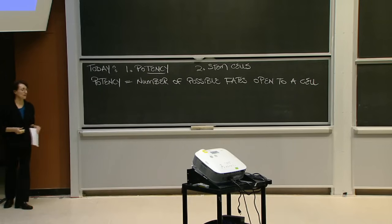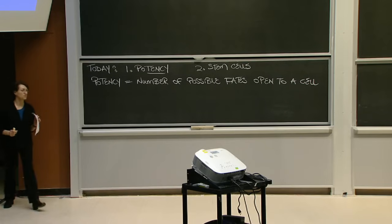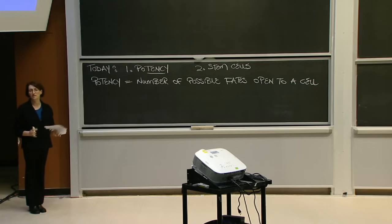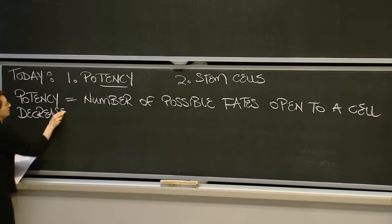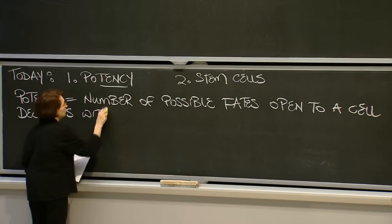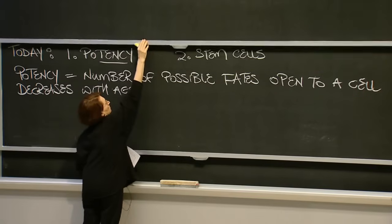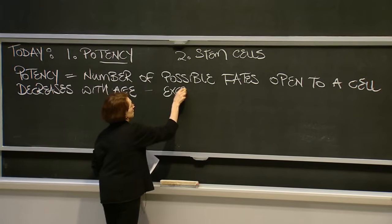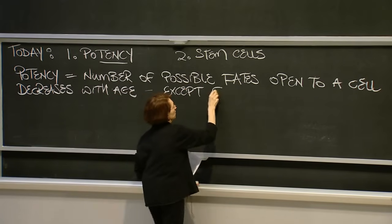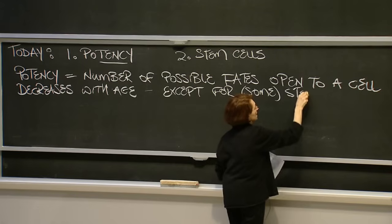This is a very important concept of development, because in general, potency decreases with age and decreases as different parts of the organism become specialized. So in general, potency decreases with age — but, as we'll explore in a moment, except for some stem cells.